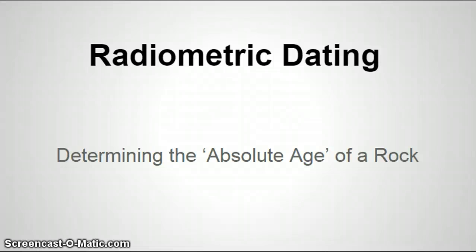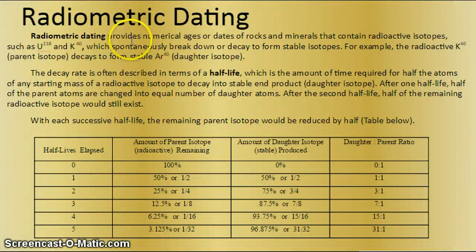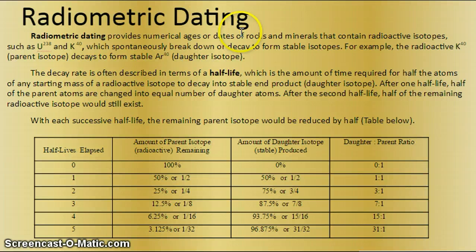All right, today we learn about radiometric dating. We will be determining the absolute age of a rock. Radiometric dating provides a numerical age or date of a rock and mineral that contains radioactive isotopes, such as uranium-238 and potassium-40, which spontaneously break down or decay to form stable isotopes.